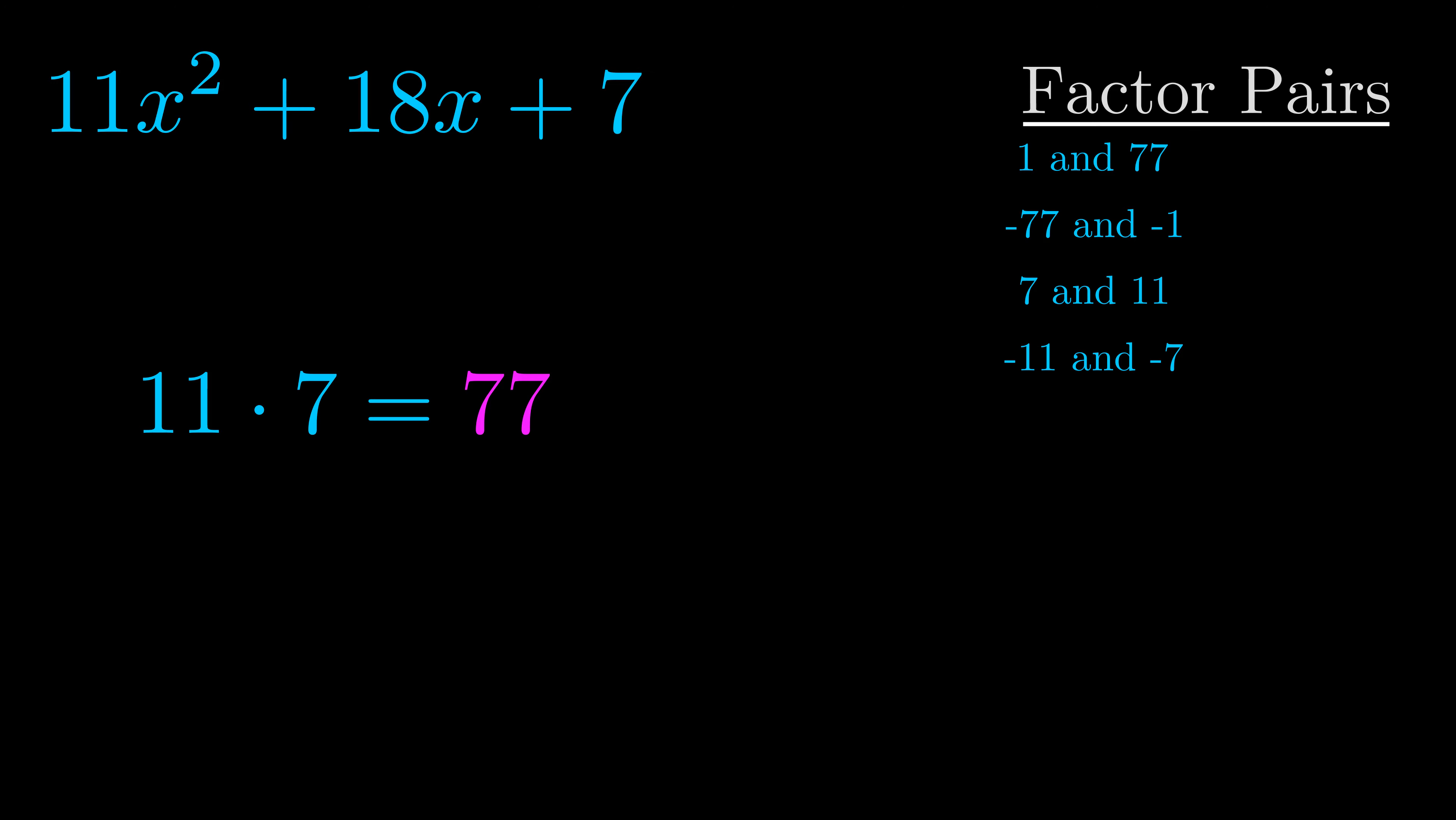Now once you have these factor pairs the goal is to find which of these pairs adds to the b value. The b value is the coefficient on the x term. That's the middle term, the one that we haven't done anything with yet. And really this is the only factor pair that we need.